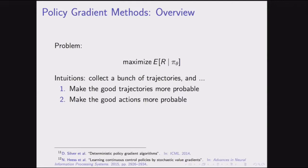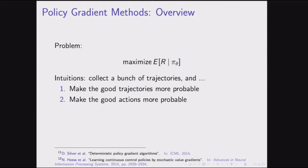Slightly better, more elaborate methods try to figure out which actions were good and which were bad, then make the good actions more probable. There's also another class of methods that differentiates the loss function with respect to the actions, trying to push the actions toward better ones. We'll mostly talk about the first two approaches.